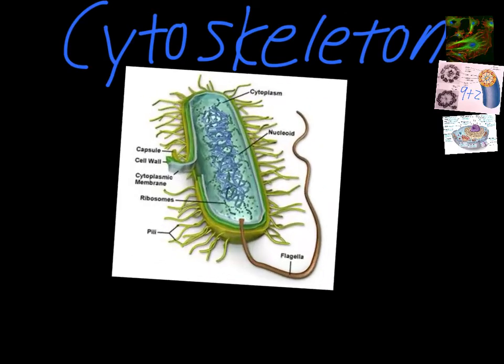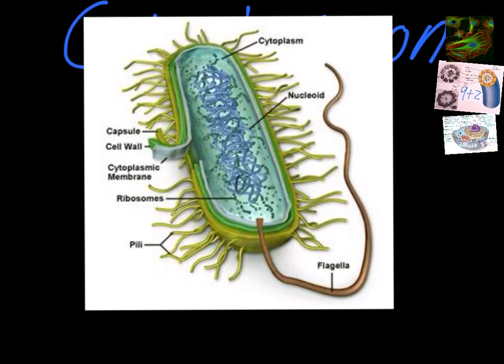In some simpler organisms, like prokaryotes, microtubules are also used for locomotion to help with movement. The flagellum — that long, thin tail coming off the end of a prokaryote — is used for locomotion. It spins and helps the organism move through the water. This entire structure is composed of microtubules, so they're not only there for support but also for movement.